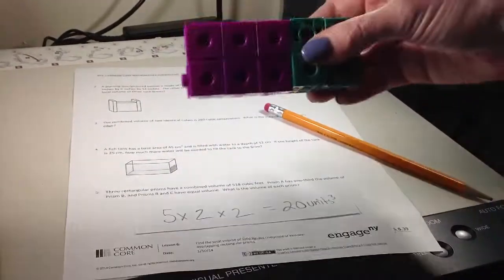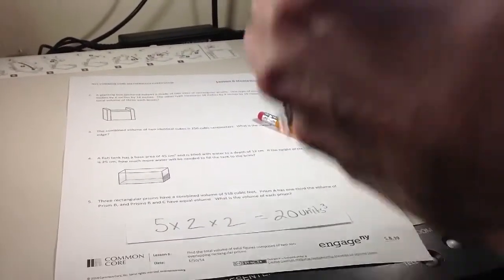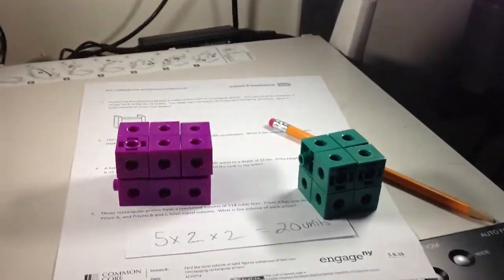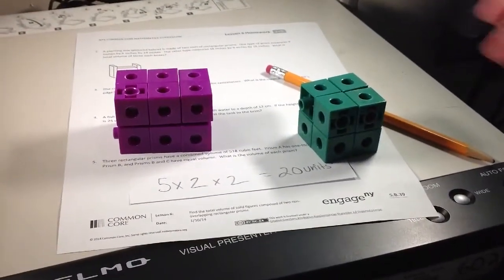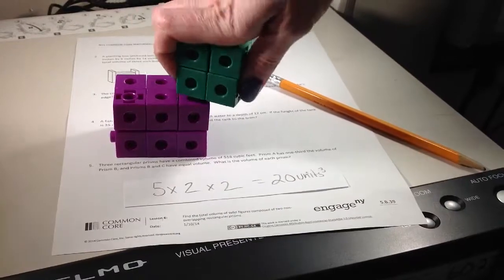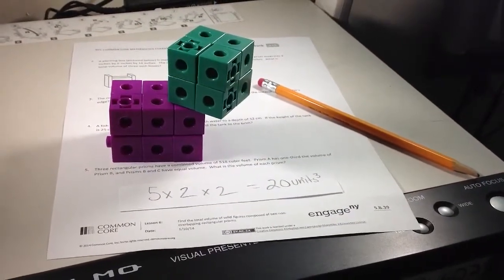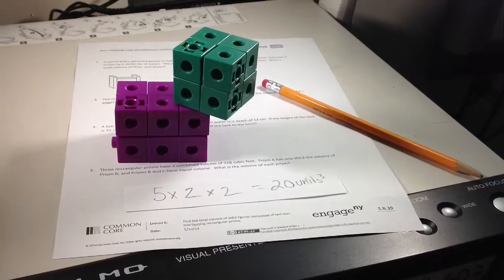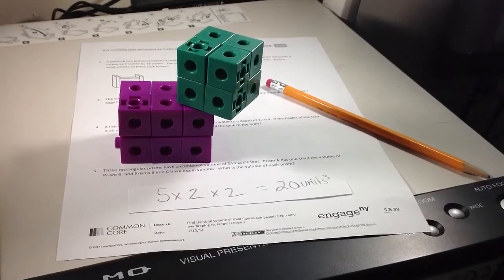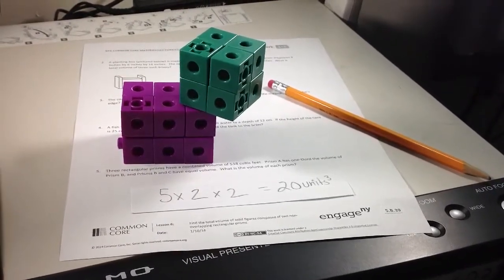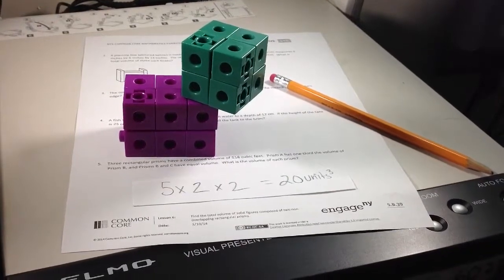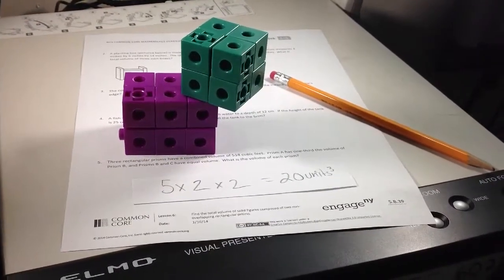And I can answer that because I have this figure that is 12 units, and I have this figure that is 8 units. And 12 plus 8 is always going to give me 20 units. So when I have two figures, I can figure out the volume of each, and then add them together. We'll look at some examples.